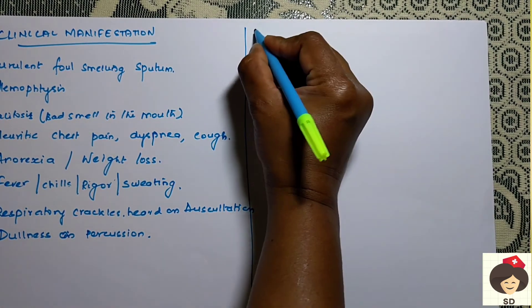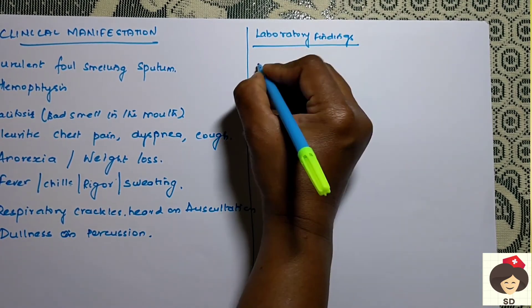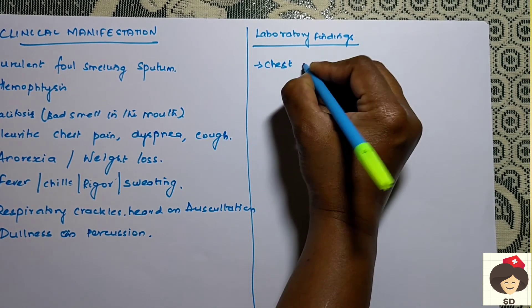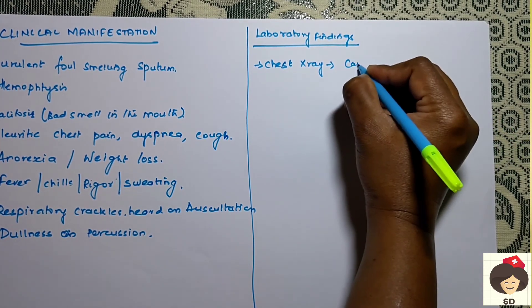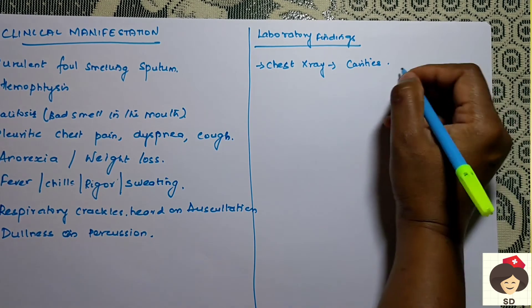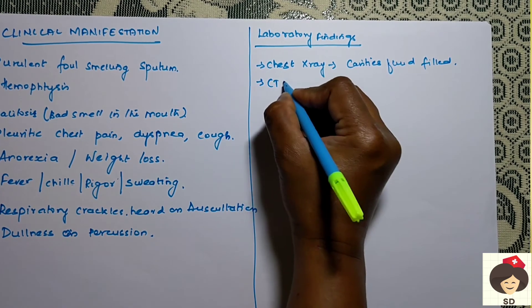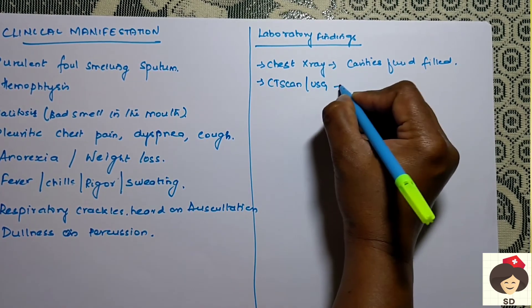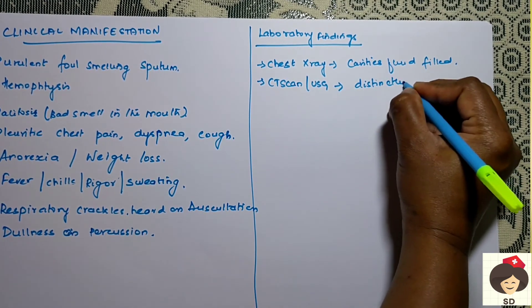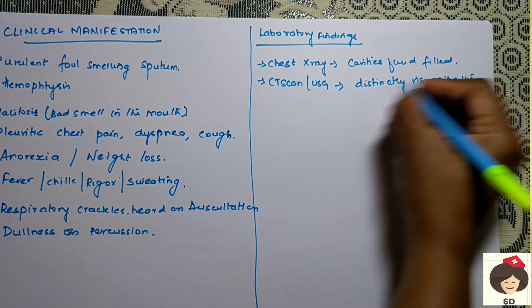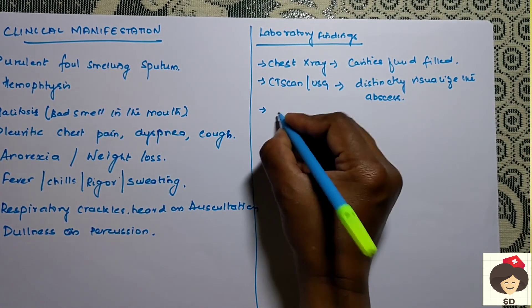Coming to laboratory findings and diagnostic studies: the first and most important test for any respiratory system disorder is X-ray, where you can see fluid-filled cavities in the lungs. Sometimes an X-ray cannot show it clearly, so a CT scan or ultrasonography can be done to distinctly visualize the abscess and pockets formed.